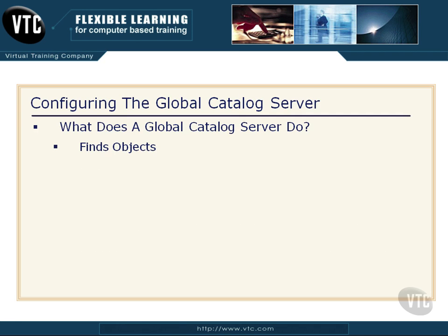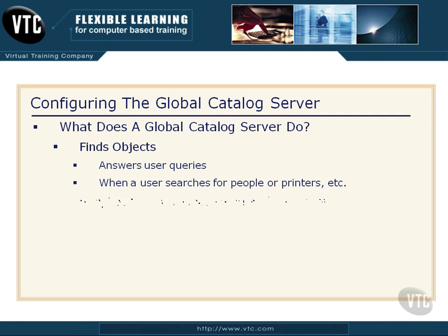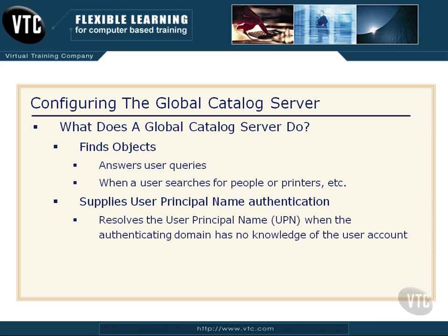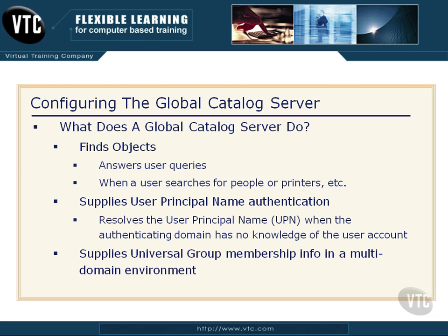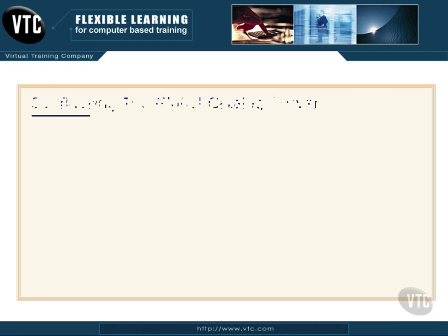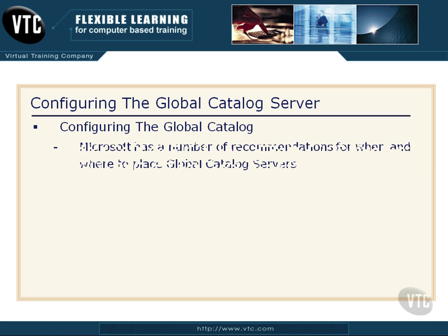So what exactly does it do? It finds objects. It answers user queries when you search for people or printers. It supplies user principal name authentication — it resolves that UPN when the authenticating domain has no knowledge of the user account. You've gone off into another domain, and the other domain says, I don't know who you are. The Global Catalog Server can tell them where to find this person and get that authentication. It also supplies universal group membership information in a multi-domain environment. So this thing does an awful lot of work.